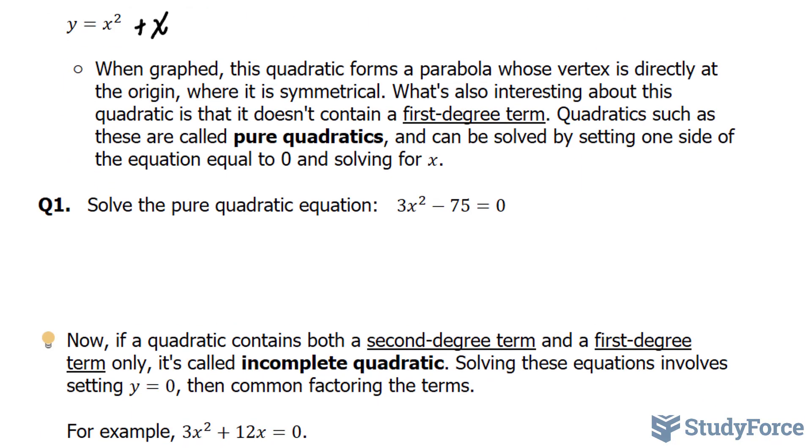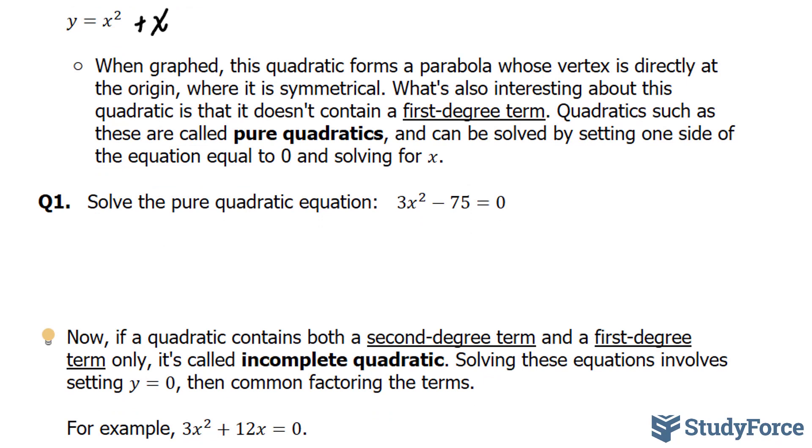Question number one reads, solve the pure quadratic equation 3x squared minus 75 is equal to 0. This is a pure quadratic because it does not contain a first degree term.